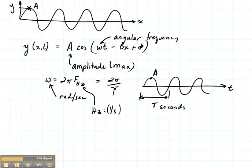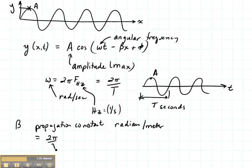Beta is our propagation constant. Beta is given in radians per meter, and that is equal to 2 pi divided by the wavelength.